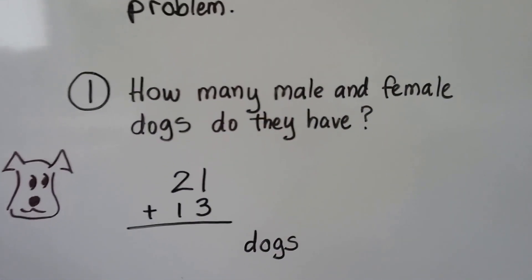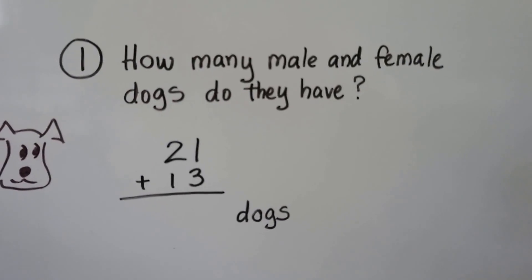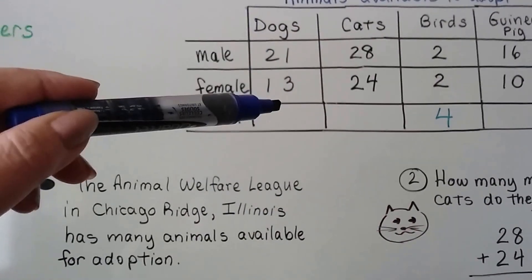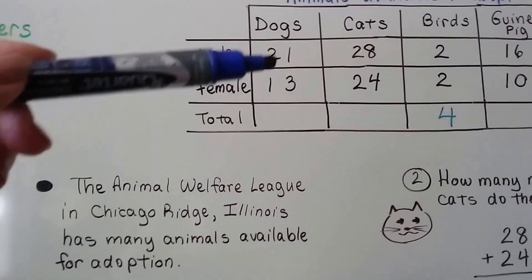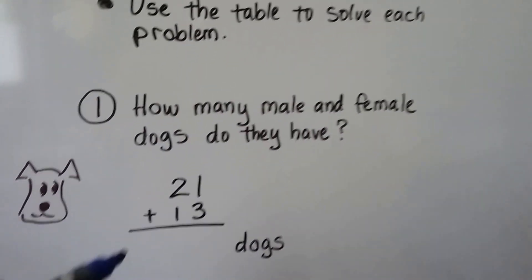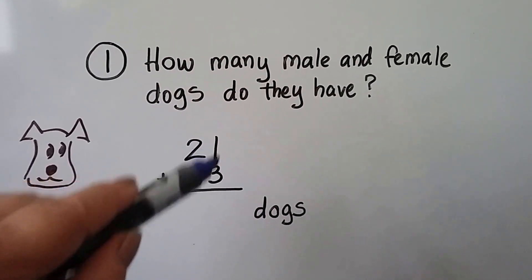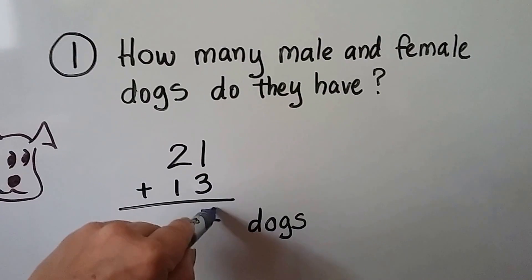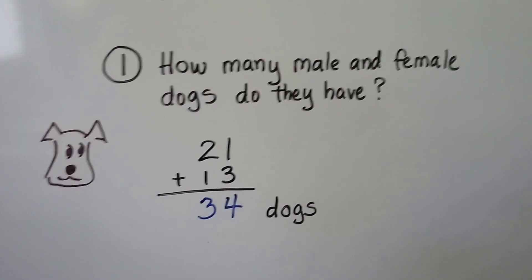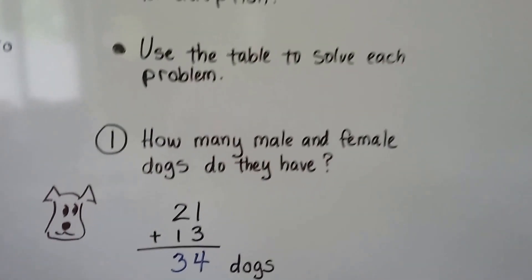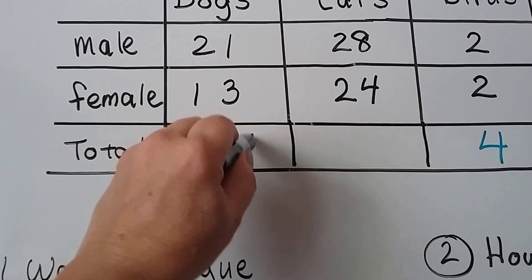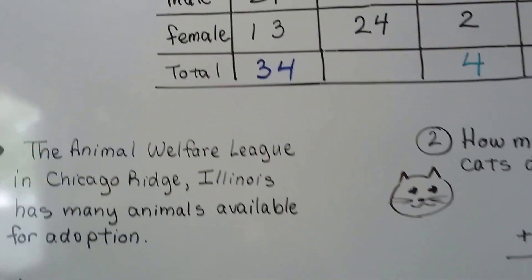The first question is: how many male and female dogs do they have? We look in the table for dogs, we look at male and female, and we see 21 and 13, so we're going to add these. We add the ones column first: three and one more is four, two and one is three. They have 34 dogs available for adoption. We can put that in the table as the total for male and female dogs.